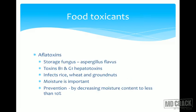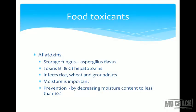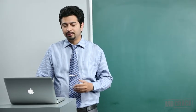Food toxicants — the first toxin is aflatoxin. It is produced by a storage fungus called Aspergillus flavus, which secretes aflatoxin — a very high-yield MCQ topic. The toxins of Aspergillus flavus are aflatoxin B1 and G1, both of which are hepatotoxic. Aflatoxin infects rice, wheat, and groundnuts. If groundnuts are stored without heating for long periods, Aspergillus flavus grows and secretes hepatotoxic aflatoxin. Prevention is done by decreasing moisture content to less than 10% and using airtight storage.